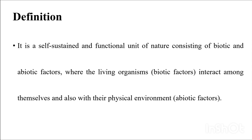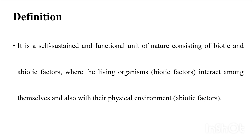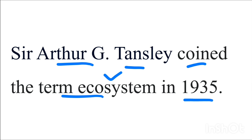First of all, what is ecosystem? It is a self-sustained functional unit of nature consisting of biotic and abiotic factors — that means living and non-living factors — where living organisms interact among themselves and also with their physical environment. Sir Arthur G. Tansley coined the term ecosystem in 1935. It is a very important point.